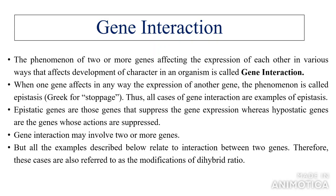Gene interaction — the phenomenon of two or more genes affecting the expression of each other in various ways that affects the development of a character in an organism — is called gene interaction. When one gene affects in any way the expression of another gene, the phenomenon is called epistasis. Thus all cases of gene interaction are examples of epistasis.